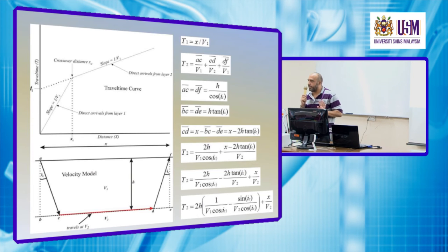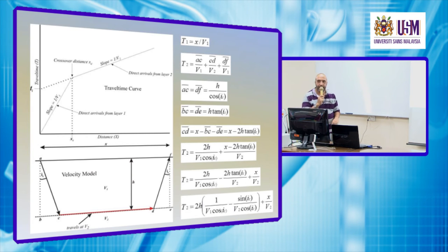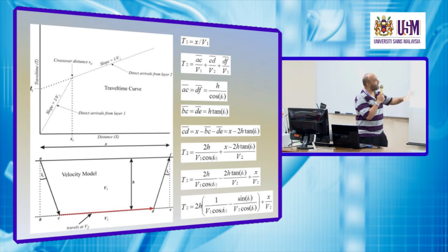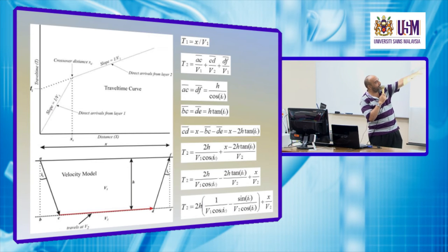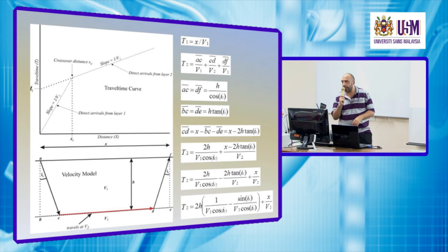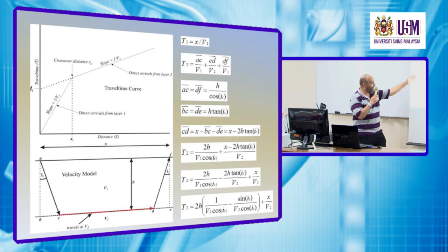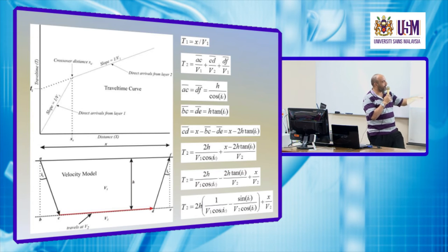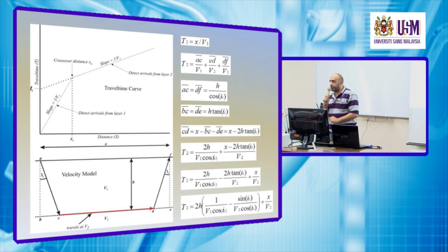Since AC and DF are equal, DF also equals H divided by cos(IC). So this length is determined, and this one also. The remaining problem is to determine CD.